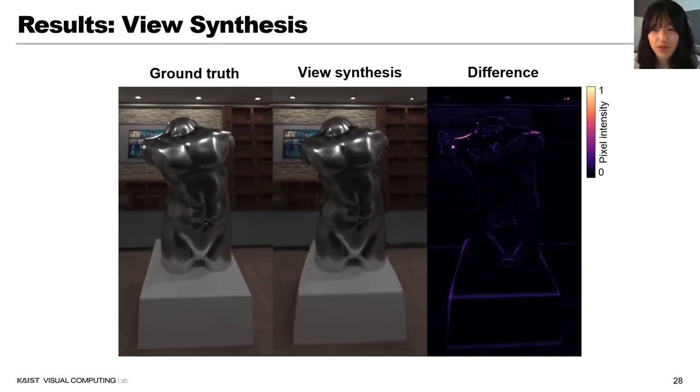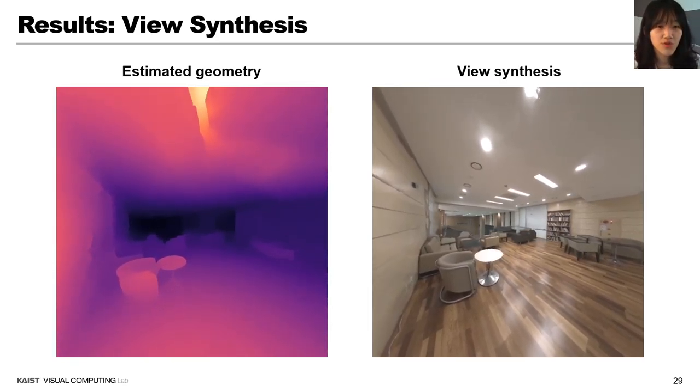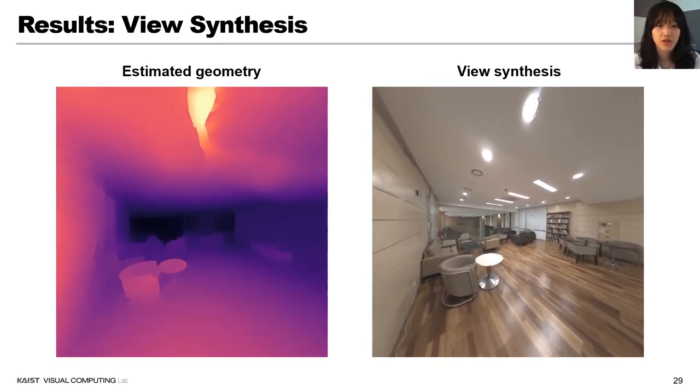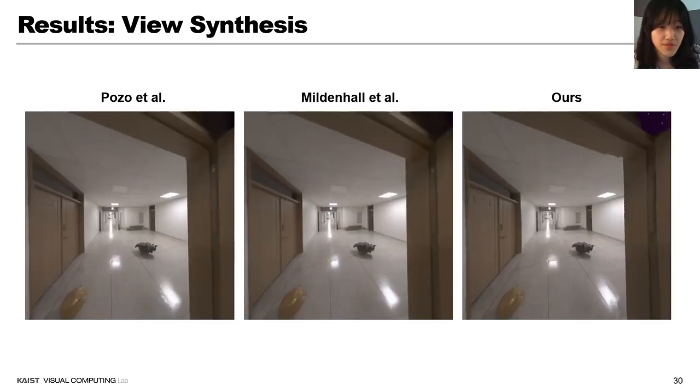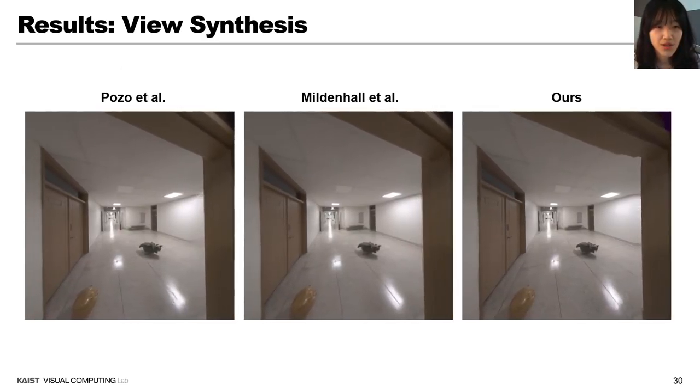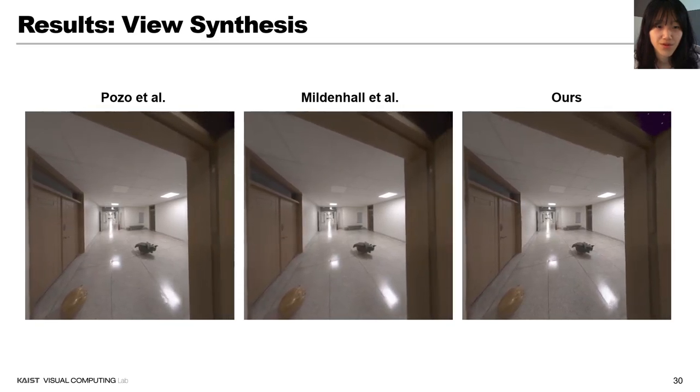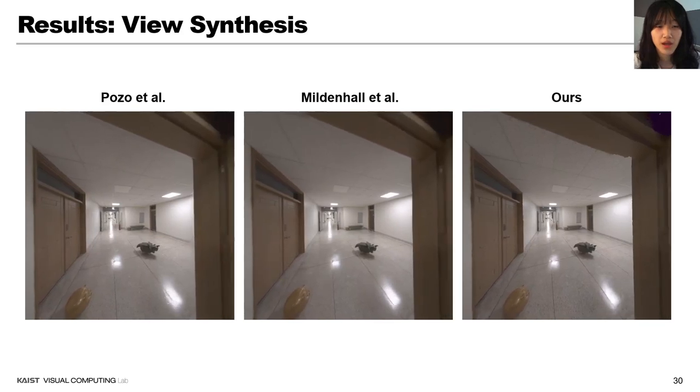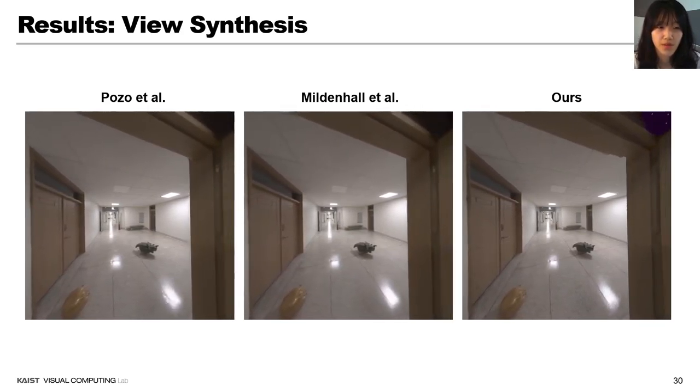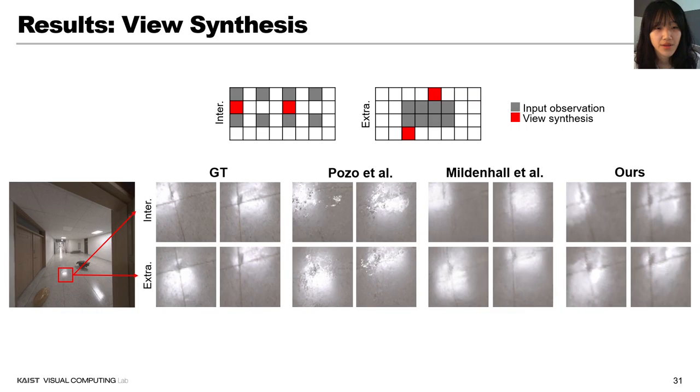Finally, we demonstrate our view synthesis result. In this synthetic experiment, our algorithm synthesizes reflection close to the ground truth, even at unseen viewpoints. In experiments with real scene, the moving reflection on the floor is realistically synthesized while keeping correct geometry. Compared to the other method, specular artifacts of Pozo et al. and over-smoothing artifacts of Mildenhall et al. are eliminated in our inverse rendering-based method.